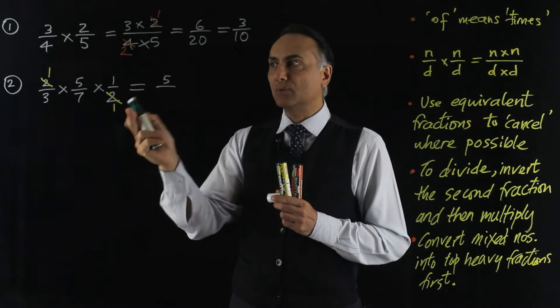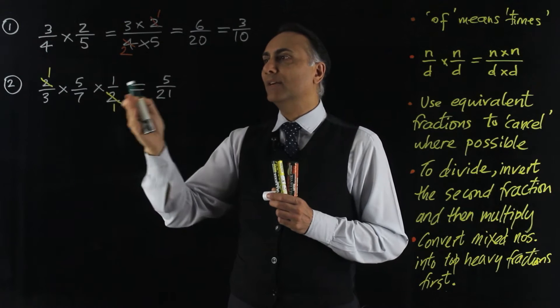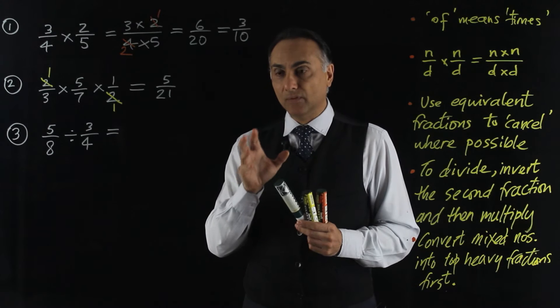and 3 times 7, which is 21, times 1, which is 21. So 2 thirds times 5 sevenths times a half is 5 21sts.